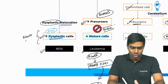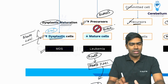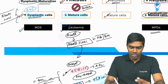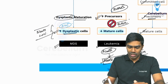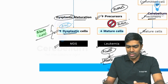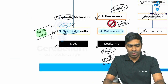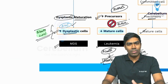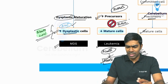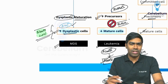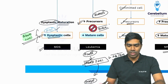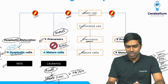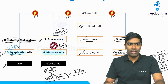By definition in MDS, the blasts should be less than 20% — if blasts are 20% or more, it becomes acute leukemia. So the clear-cut criteria for diagnosing MDS: dysplastic cells more than 10%, and blasts less than 20% — in most cases less than 5%. That is myelodysplastic syndrome.